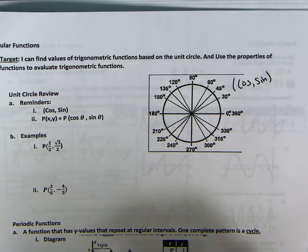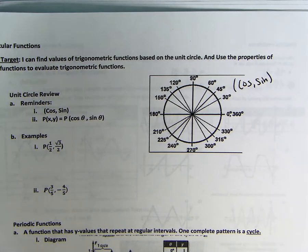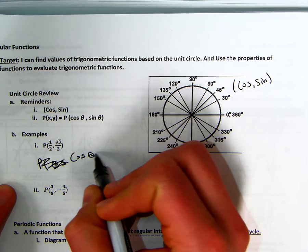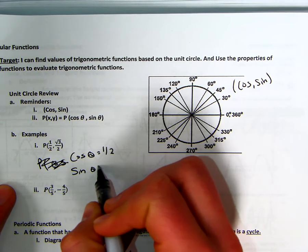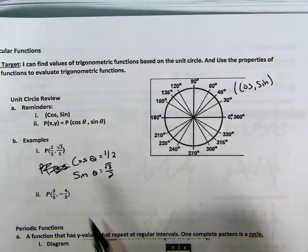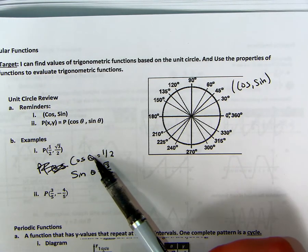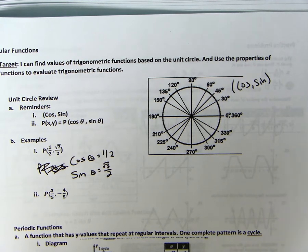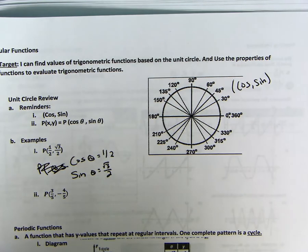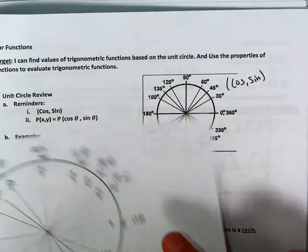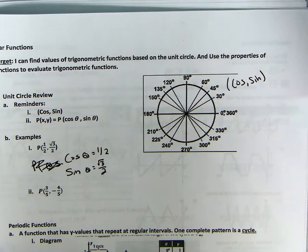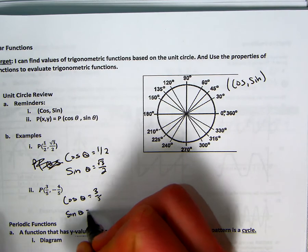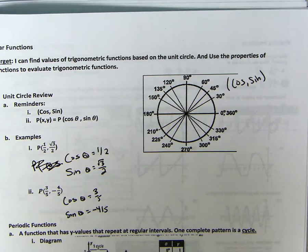All right, so these examples will be pretty quick. But if you ever have P of a half, comma, square root of 3 over 2, it's just you know that the cosine of theta equals a half and the sine theta equals the square root of 3 over 2. So this just tells you that the cosine of theta equals a half and the sine of theta is the square root of 3 over 2. And then you could think, what is this P representing? You could look on your unit circle and be like, okay, it's talking about 30 degrees or pi over 6 for radians. Same thing with number 2. So the cosine of theta equals 3 fifths, sine theta equals negative 4 over 5. That's pretty straightforward.